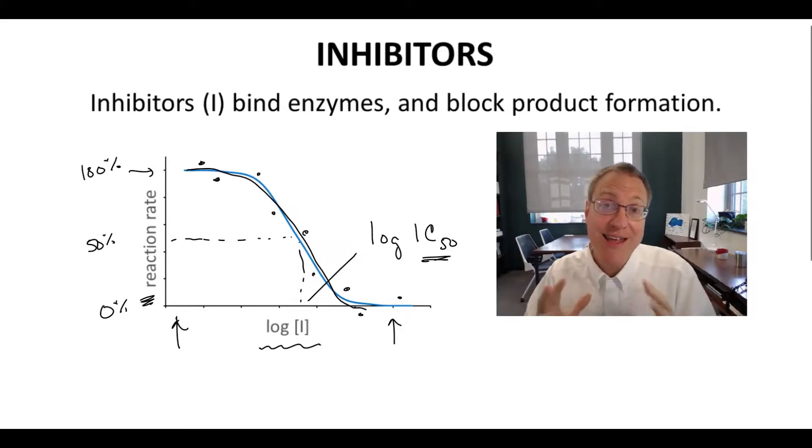How do you design an inhibitor? Well, if you know the structure of the substrate, which binds the enzyme's active site, then maybe that structure of the substrate will tell us the structure of an inhibitor, which can also bind and block the active site of an enzyme. Let's see an example.